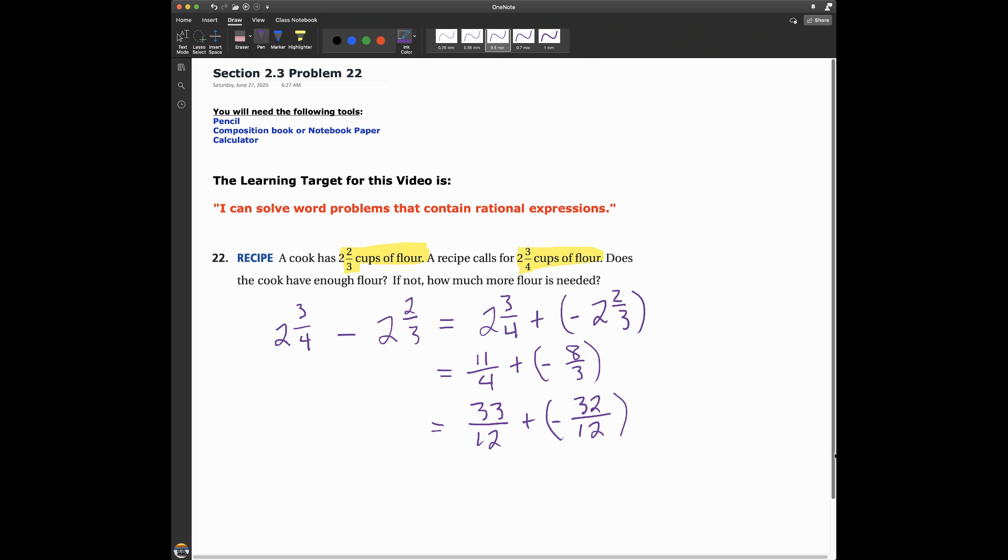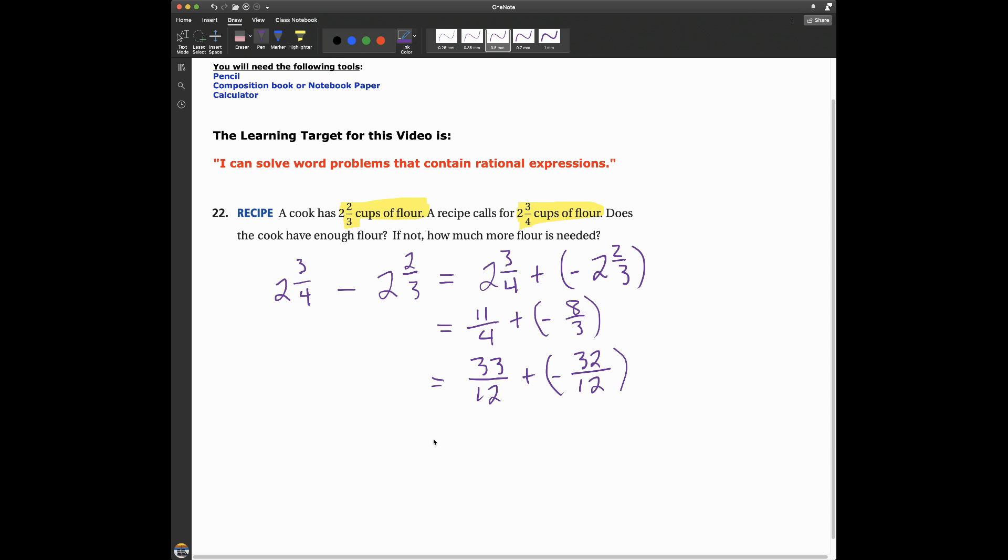Now we can combine our numerators. Let me write those down. 33 plus negative 32 all over 12. Same sign add and keep, different sign subtract. 33 minus 32 is just 1 over 12.